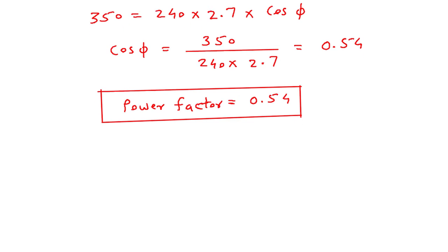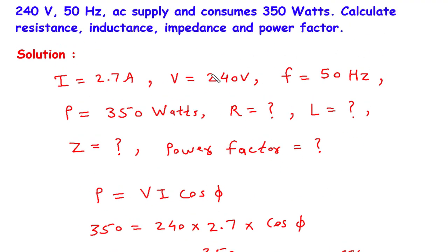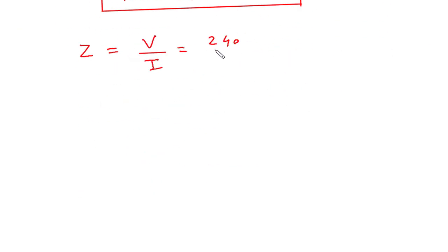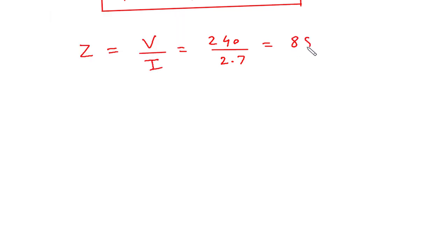From here we can also find the value of impedance. Z = V / I = 240 / 2.7 = 88.8. Therefore, Z = 88.8 ohm.